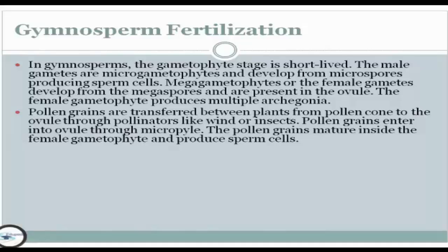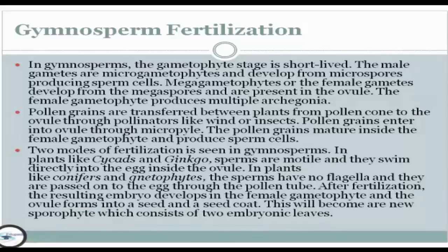The pollen grains mature inside the female gametophyte and produce sperm cells. Two modes of fertilization are seen in gymnosperms. In plants like cycads and Ginkgo, sperm are motile and swim directly to the egg inside the ovule. In plants like conifers, the sperm have no flagella and are delivered to the egg through the pollen tube. After fertilization, the resulting embryo develops in the female gametophyte, and the ovule forms into a seed with a seed coat.